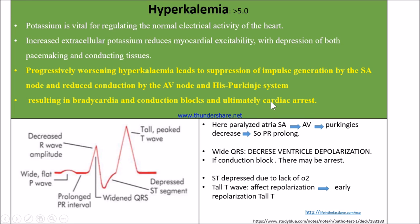This may lead to bradycardia and conduction block, and ultimately cardiac arrest. With hyperkalemia ECG changes, when the SA node is paralyzed, atrial impulse travel from AV node through Purkinje fibers and His bundle is decreased. There will be a prolonged PR interval and widened or flattened P wave due to more negativity.